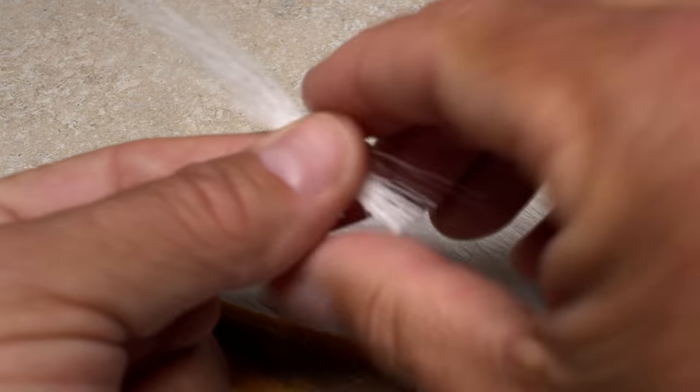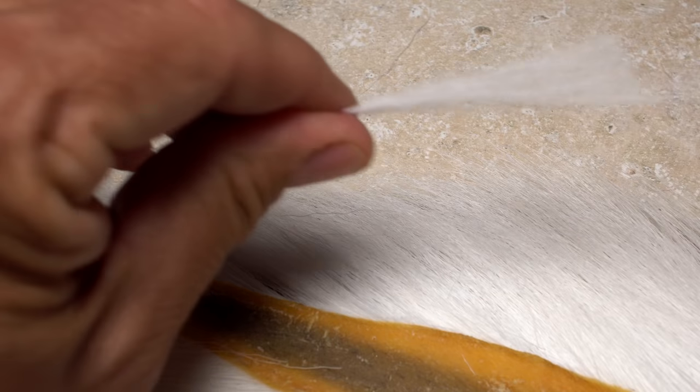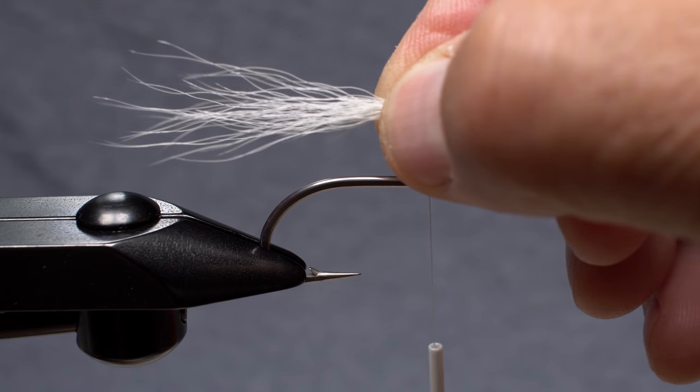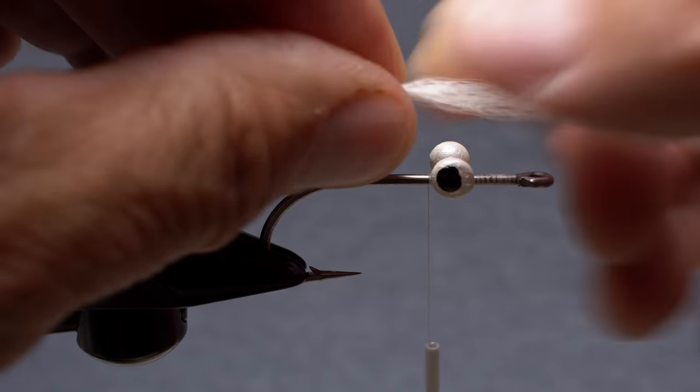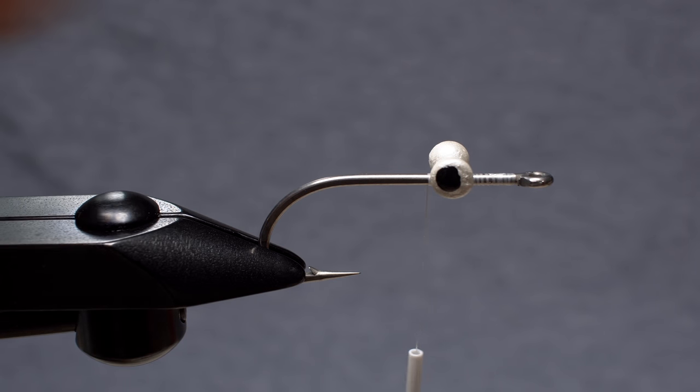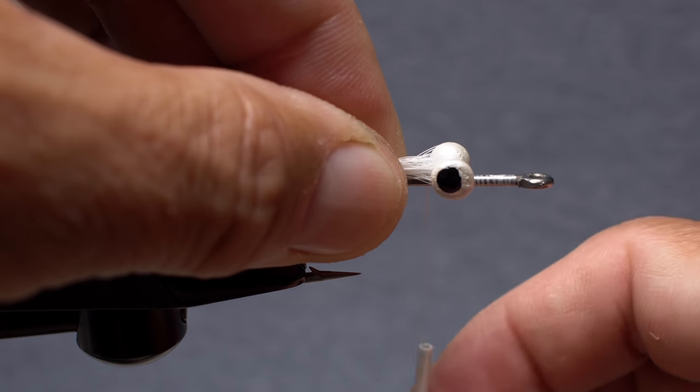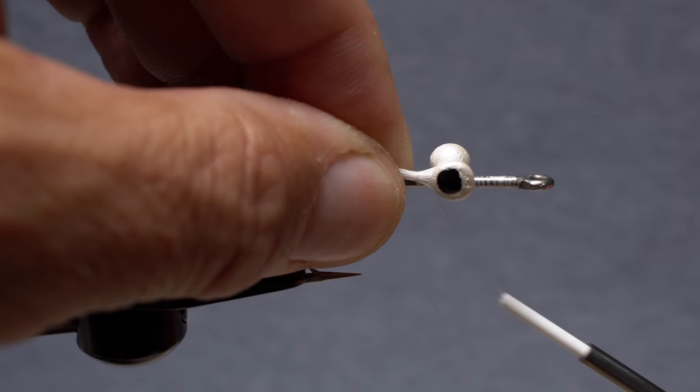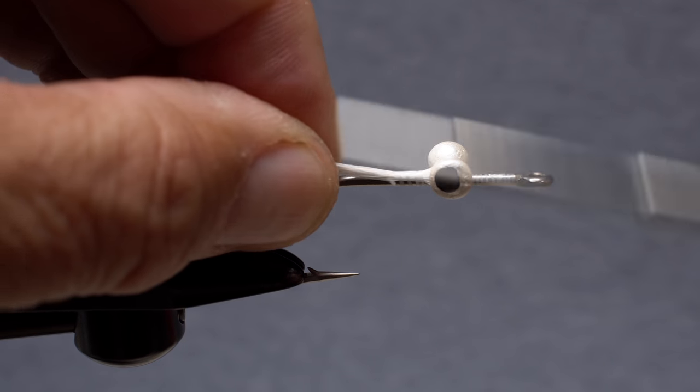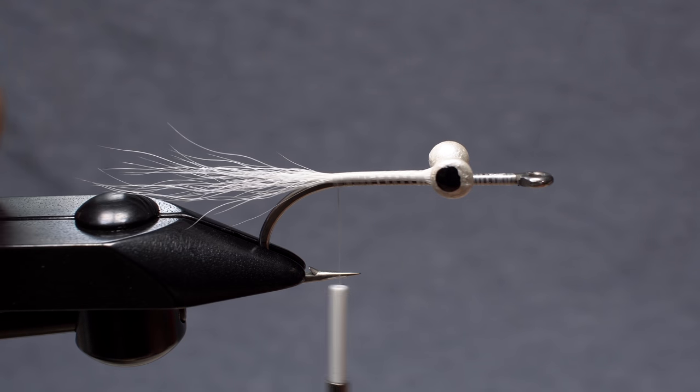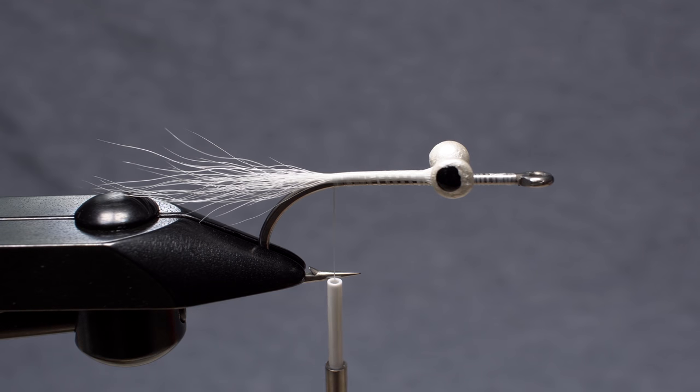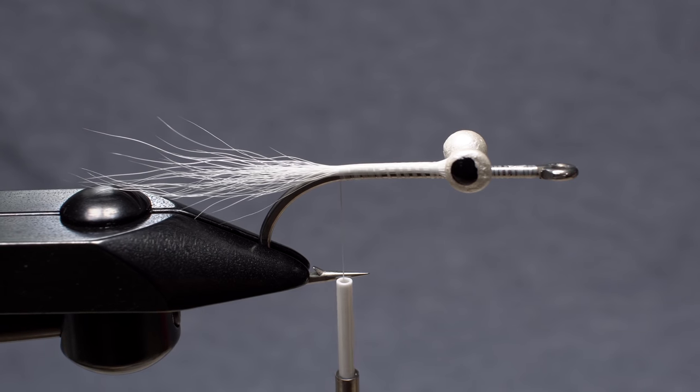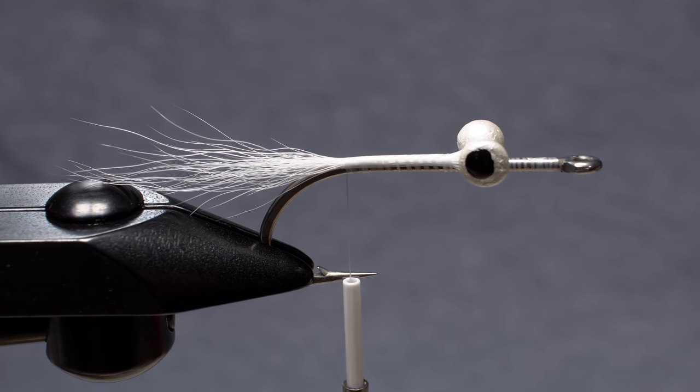Although not essential, I like to snip a small clump of white bucktail free from the hide, then position it on top of the hook shank so it extends about a shank length past the hook bend. I'll then snip the bucktail off at the location of the eyes. Give your bobbin a good counterclockwise spin so the thread jumps rearward to catch the butt ends. Then bind the bucktail to the shank all the way back to the start of the bend. Just a small amount of bucktail creates a larger, flatter surface, making it far easier to tie in the deceiver-style tail.